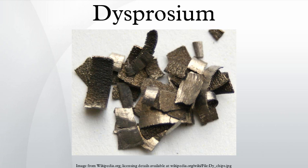Naturally occurring dysprosium is composed of seven isotopes: 156-Dy, 158-Dy, 160-Dy, 161-Dy, 162-Dy, 163-Dy, and 164-Dy. These are all considered stable, although 156-Dy decays by alpha decay with a half-life of over 1×10^18 years.